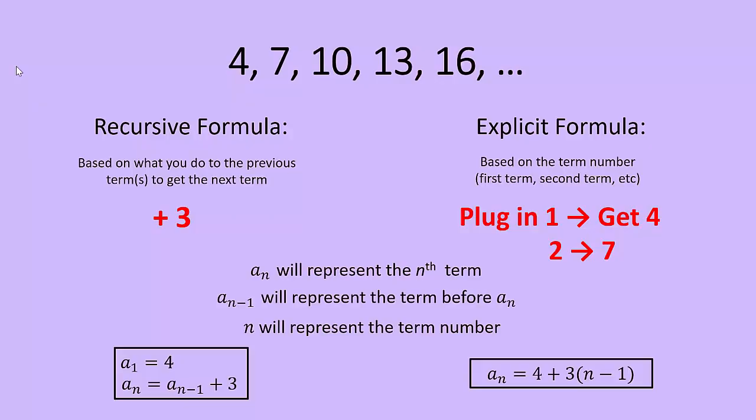The important part that I want you to really focus on in this explicit formula is that if you plugged in 5 for n, it would look like a5 = 4 + 3(5 - 1). And then we would do the arithmetic, we would get 4 + 3 times 4, which would be 4 + 12, which would be 16. So see that the fifth term should be 16.